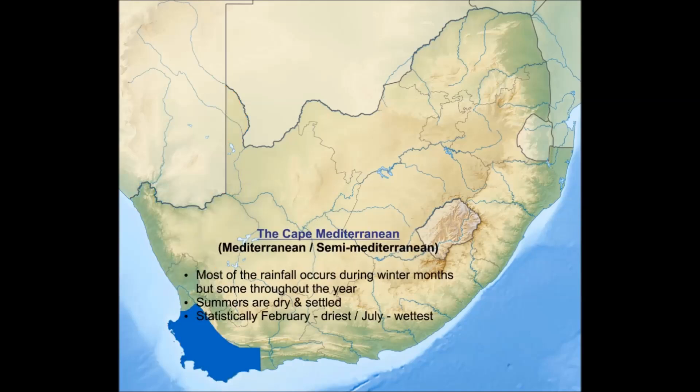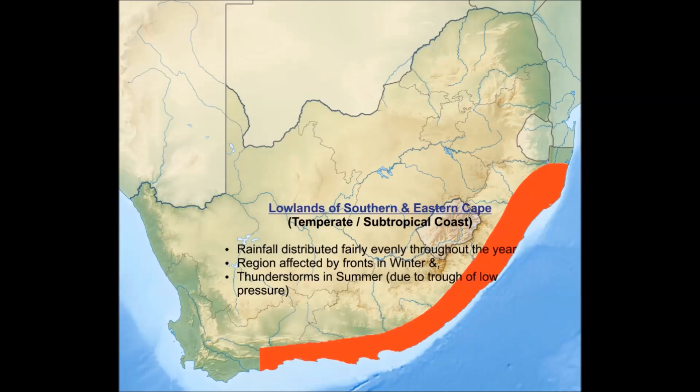The Cape Mediterranean is classified as Mediterranean or semi-Mediterranean. The most important characteristic here is that it rains primarily in winter. The lowlands of the southern and eastern Cape are classified as a temperate or subtropical coast and experience even rainfall throughout the year.